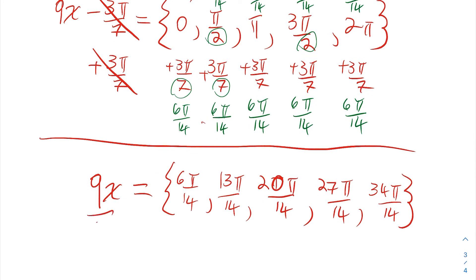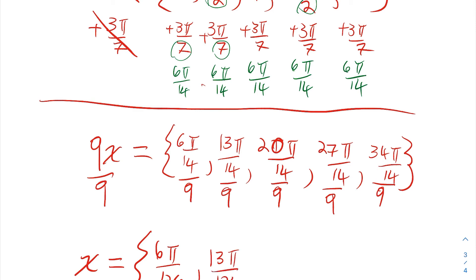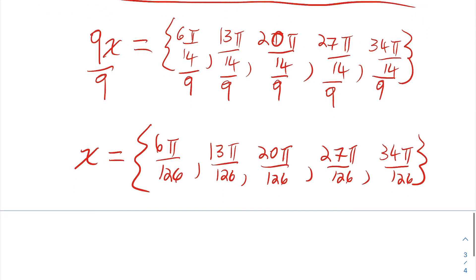The last step is to divide all these by 9. When I divide all of them by 9, I get the x-values for the 5 key points. Dividing — you flip and multiply — gives: 6pi over 126, then 13pi over 126, then 20pi over 126, then 27pi over 126, and lastly 34pi over 126. Then all we have to do is reduce the ones that need to be reduced.